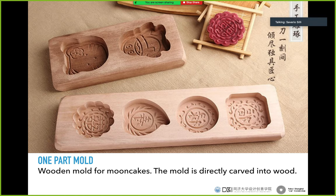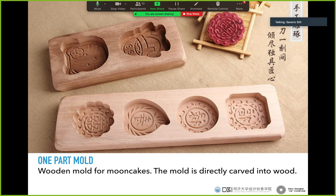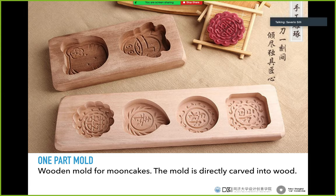One-part mold. One example is the mold for mooncakes or other kinds of cakes — very common in China, made of wood. The mold is directly carved into wood, and the material you put inside must be pressed. What happens is that the wood absorbs some moisture from the material, the material reduces its volume, and by reducing its volume it automatically demolds — it comes out of the mold easily.